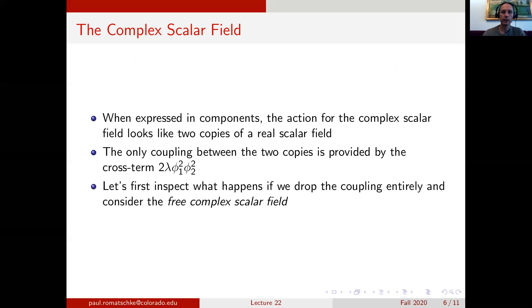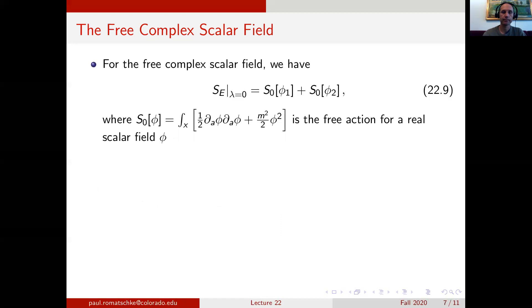If we drop the interaction term completely, we can investigate what happens for the free complex scalar field and see what happens in particular to the partition function for this theory. For the free complex scalar field, defined as the action evaluated at lambda equals 0, the action separates into two components: the first is a functional of phi 1 only, and the additional contribution is a functional of phi 2 only, where each S naught is nothing but the Euclidean action for a free real scalar field.